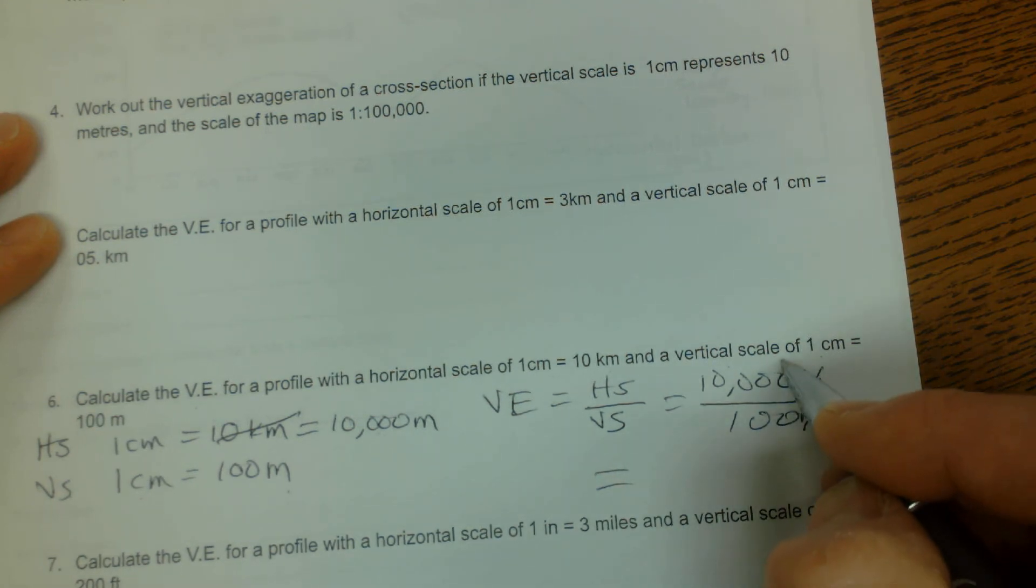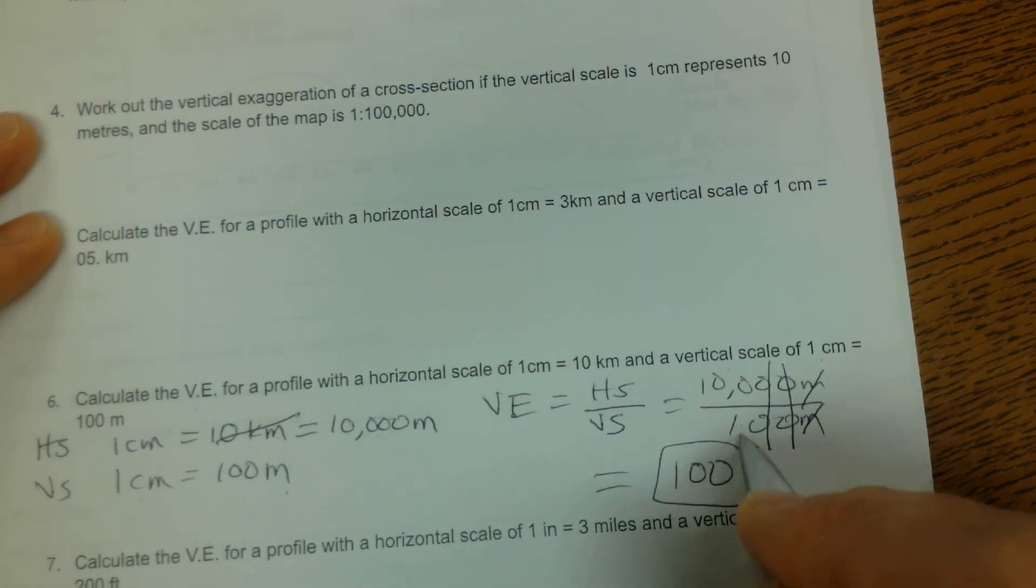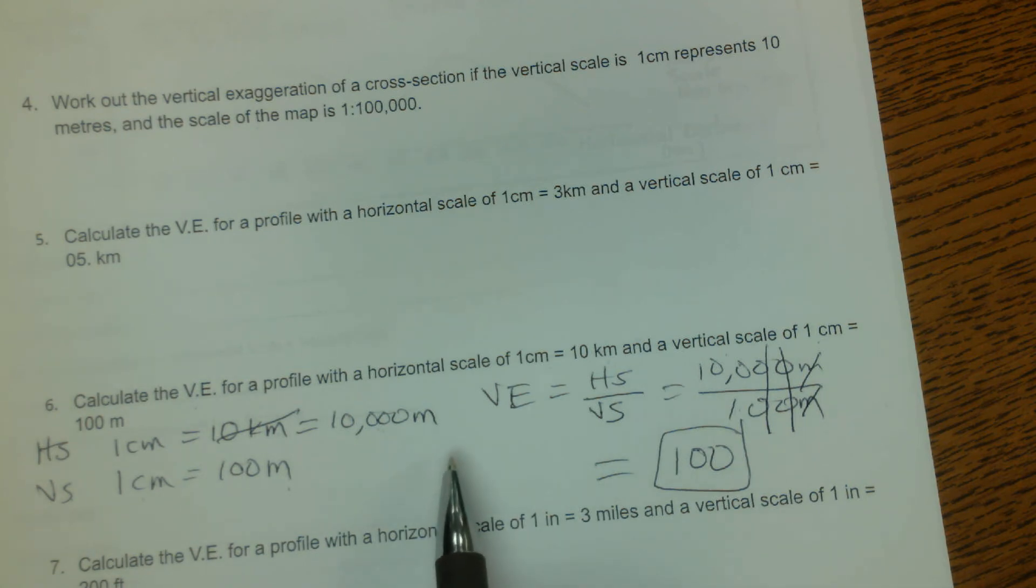The units cancel, these zeros cancel, these zeros cancel, end up with 100 divided by 1. And so my vertical exaggeration for these two ends up to be 100.